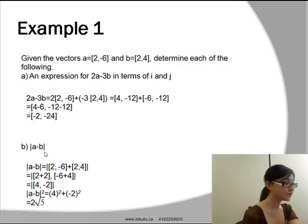The magnitude of a-b will be equal to the magnitude of [2,-6] minus [2,4]. And that's going to give us a magnitude of [4,-2]. These are still two values on the plane, and we need to find the magnitude between these two. So we use the Pythagorean theorem: 4²+(-2)² = |a-b|², which gives us 2√5.